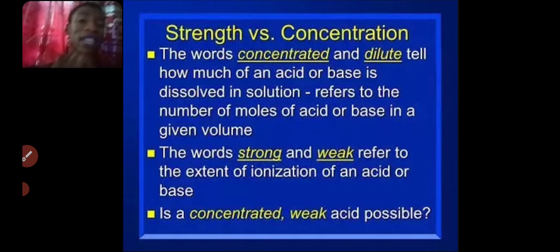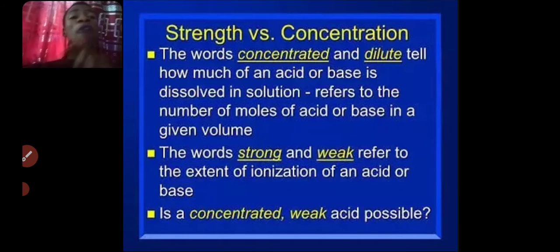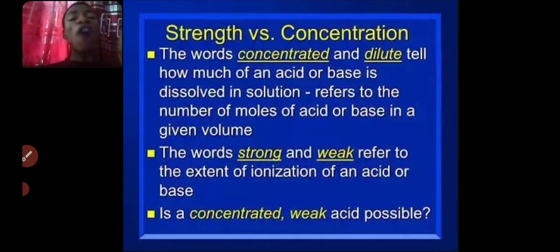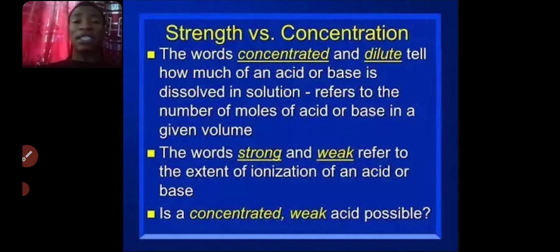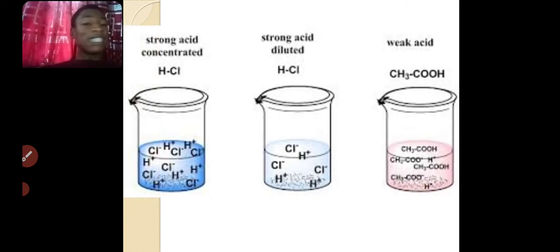A strong acid can be concentrated, and a strong acid can be diluted. A weak acid can also be concentrated or diluted. Concentration is a function of how much water is present in the acid. But strength is a function of the degree of ionization — how the acid ionizes inside water. Don't ever mistake a strong acid for a concentrated acid; a strong acid does not necessarily mean it is going to be concentrated.